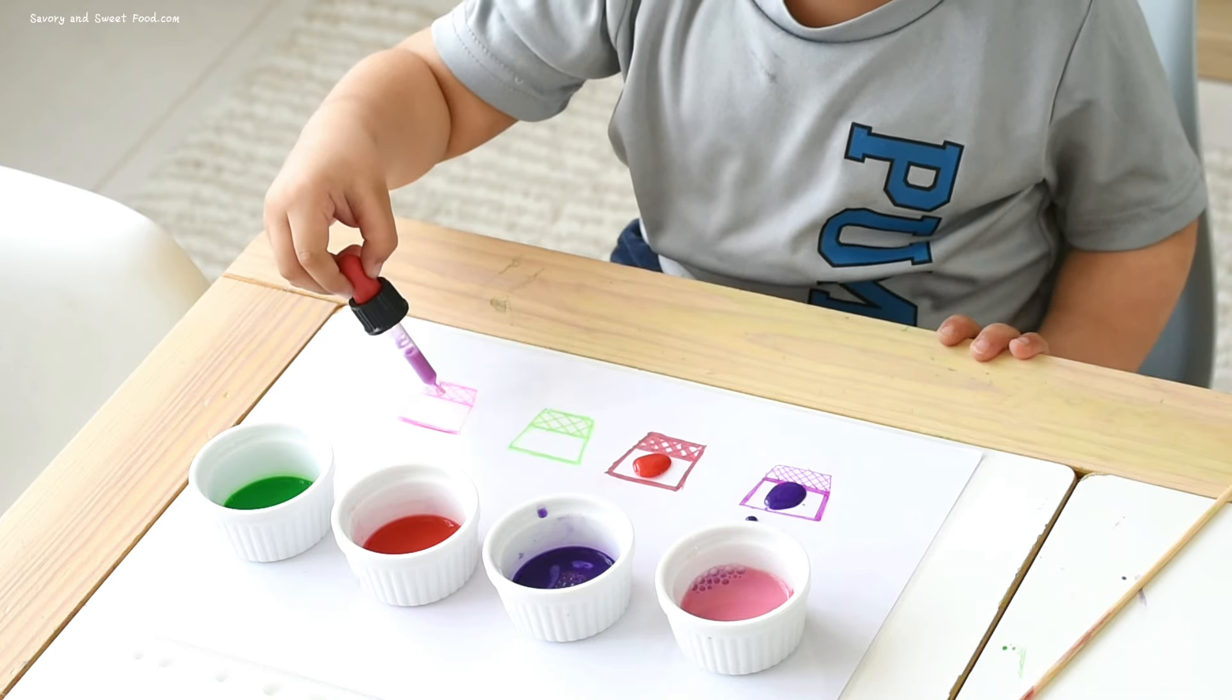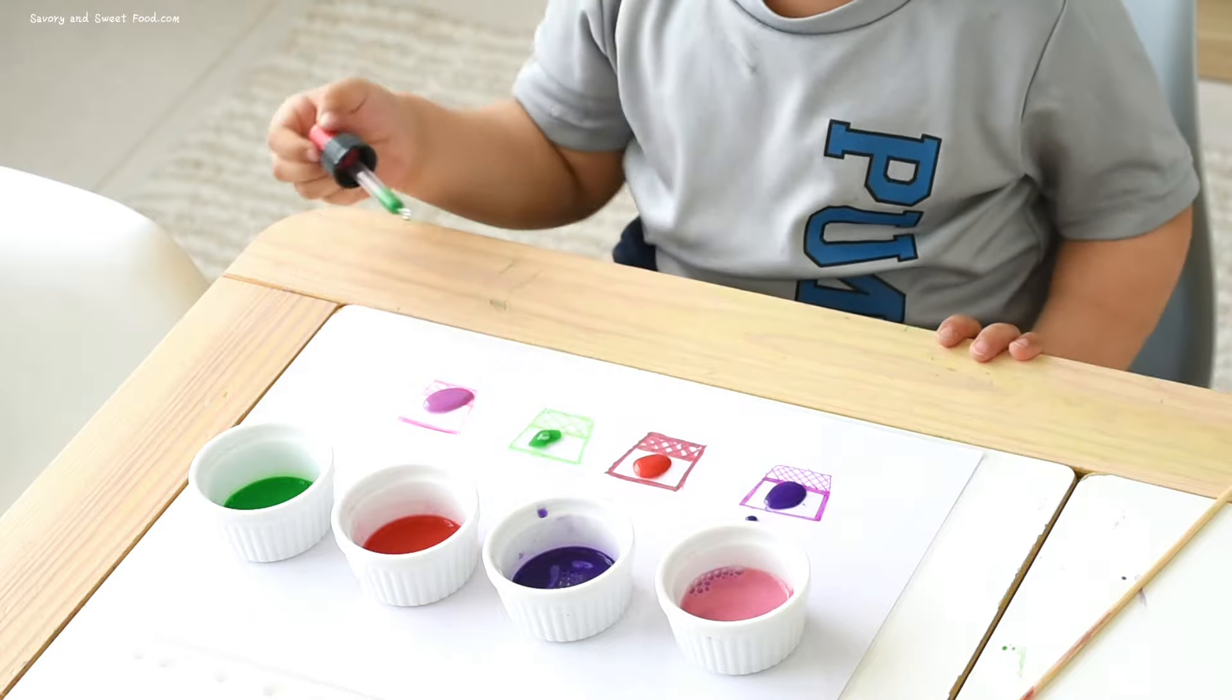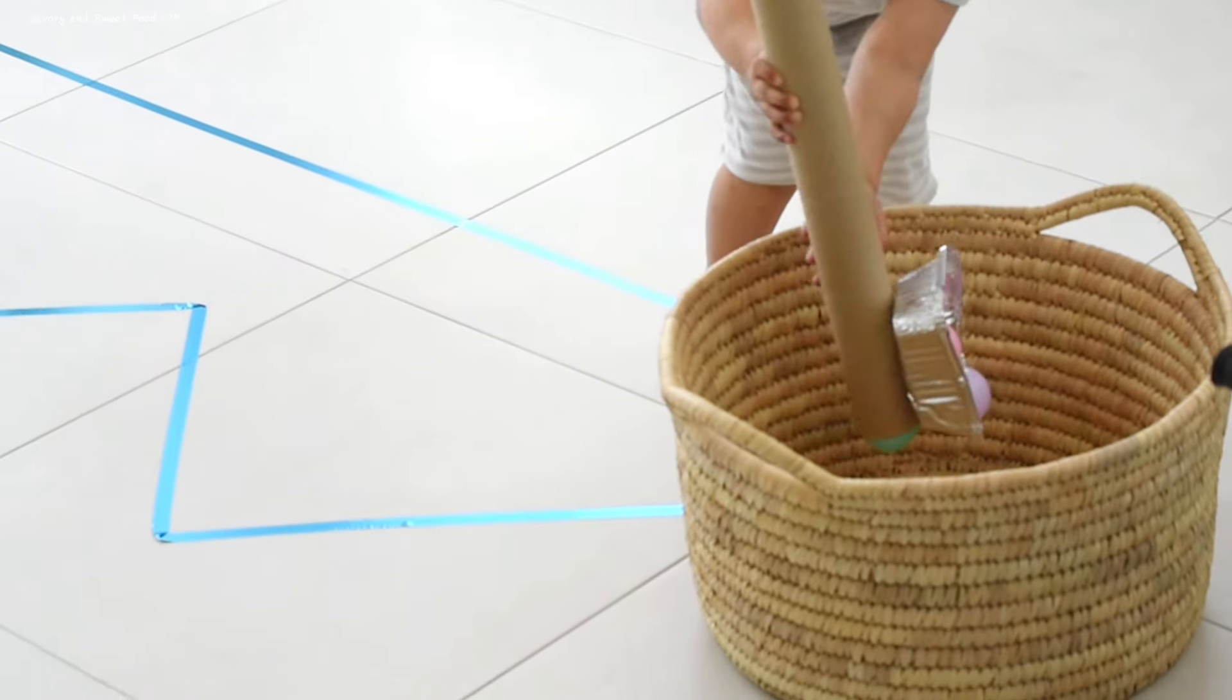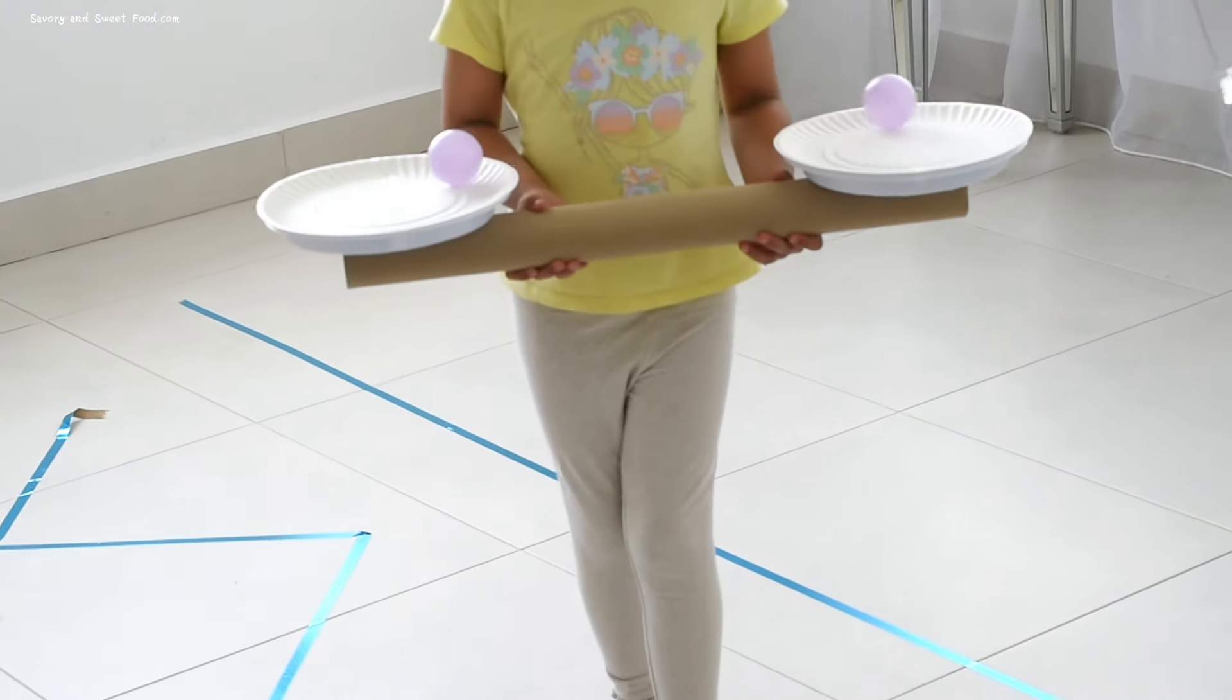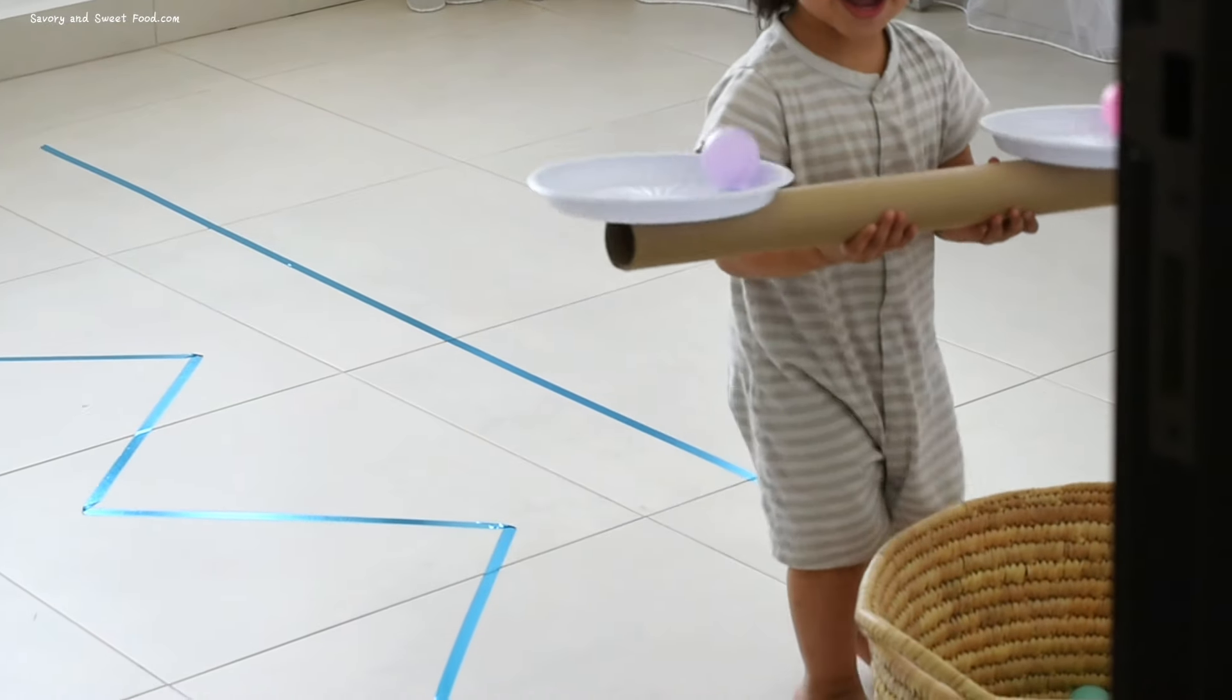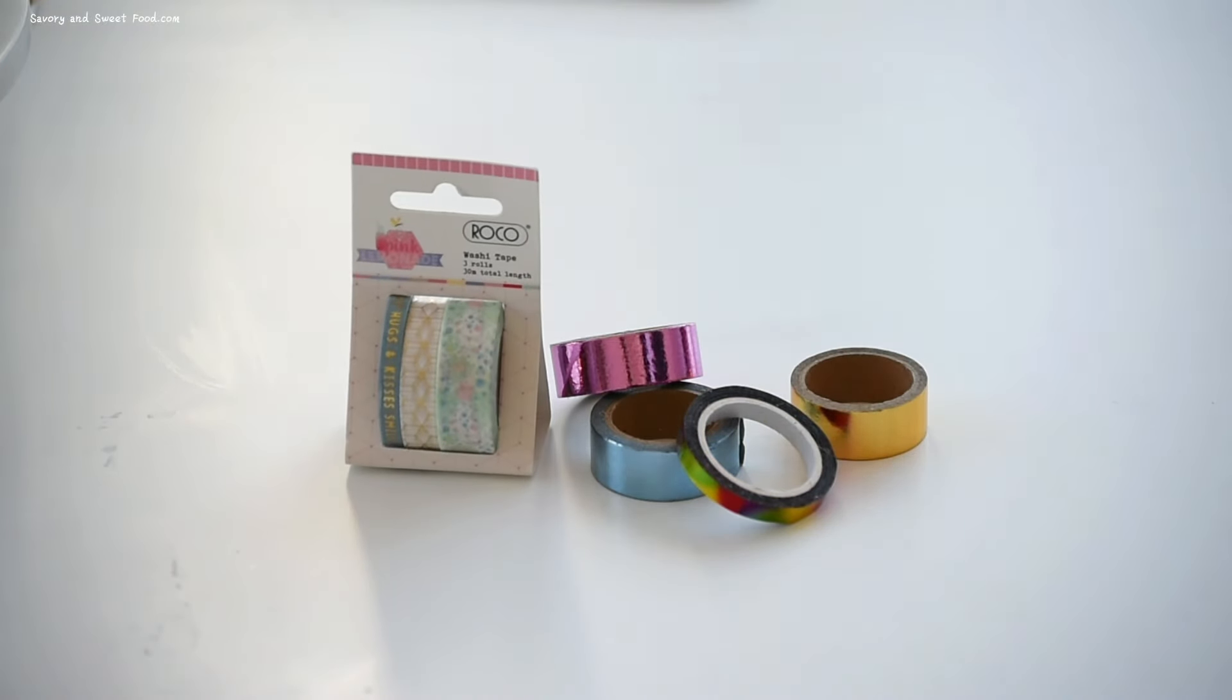Time for the exciting ball balancing game. Using washi tape, I created straight and zigzag lines on the floor with a cardboard roll as a balancing beam and plates on each end. Aisha and Omar had to walk the line carrying balls in the plate without dropping any. I adjusted the difficulty level for both kids. For Omar, I used plates with edges to make it simpler, while for Aisha I opted for flat plates, adding an extra layer of difficulty to her balancing act.